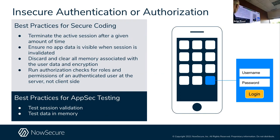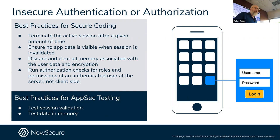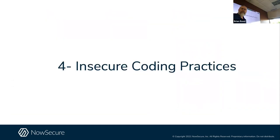When we do our analysis, we have the application running using Radare so we can see every memory call. You can quickly find PII and encryption keys just by looking at live memory in the device. That's oftentimes how the bad guys find it.